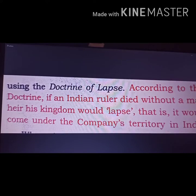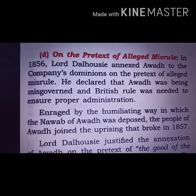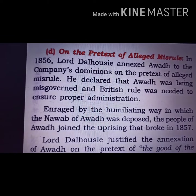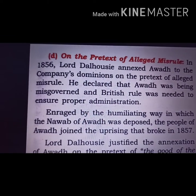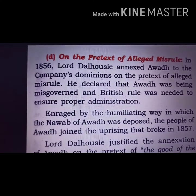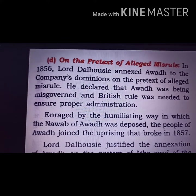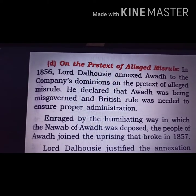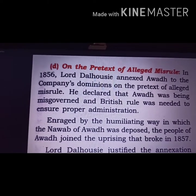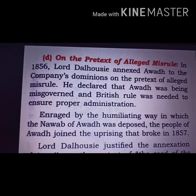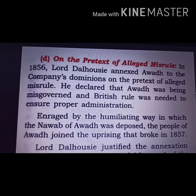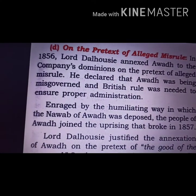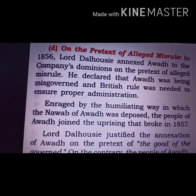The next topic is the Policy of Pretext of Allied Misrule, introduced by Lord Dalhousie. Under this rule, they annexed Awad. According to this policy, if any king was deemed unable to govern properly by East India Company standards, they could capture that state. Awad was the first state captured this way — they blamed the Nawab of Awad for improper governance and poor administration, then captured the state in a humiliating manner.